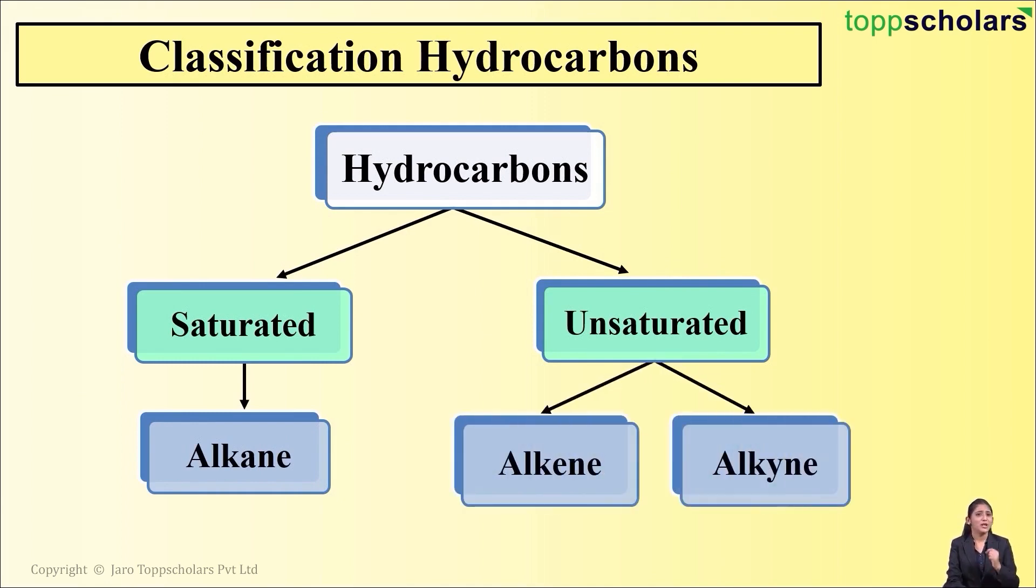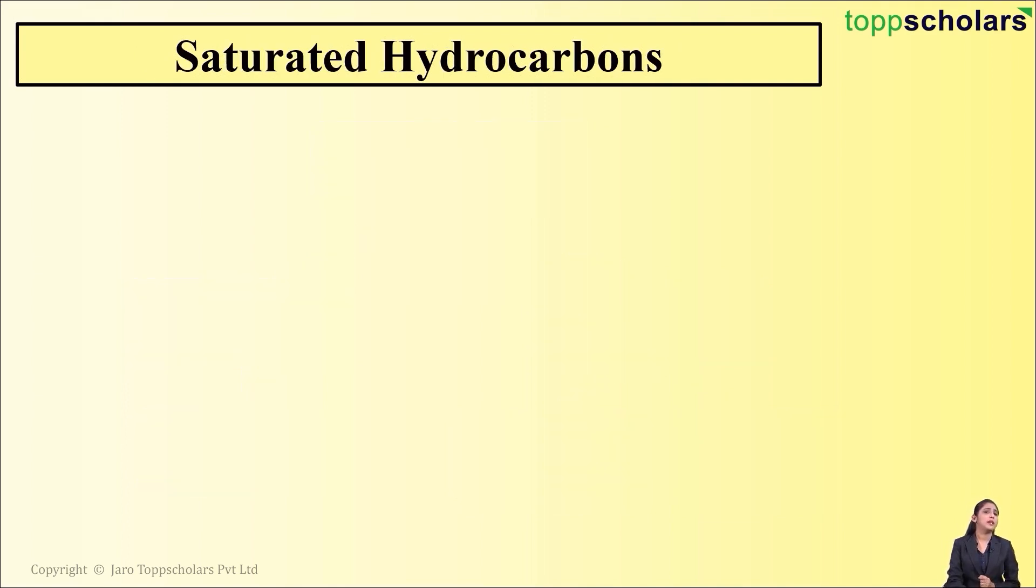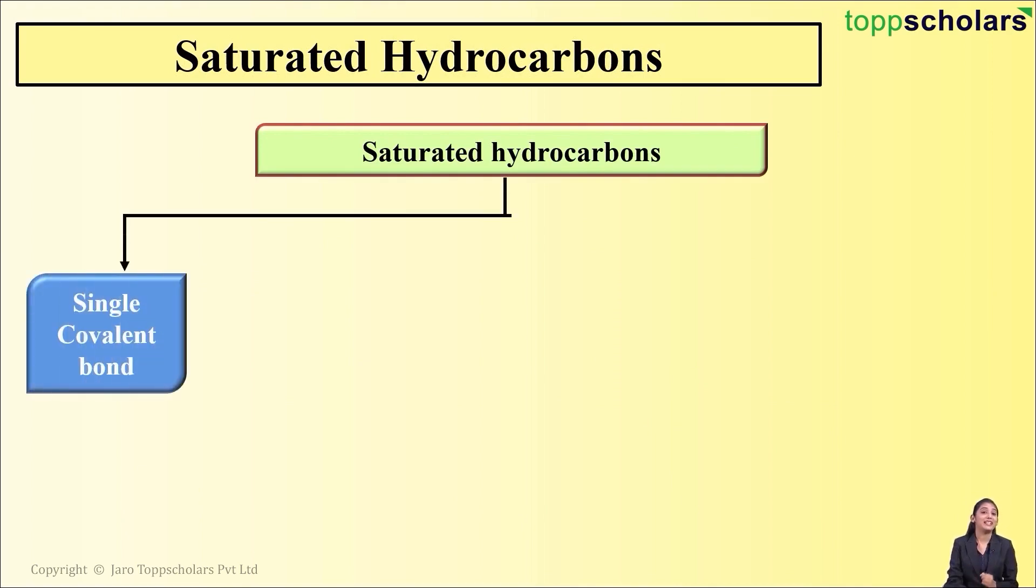Saturated hydrocarbons are hydrocarbons which contain carbon-carbon single bonds - that is, single covalent bonds. These saturated hydrocarbons are called alkanes. Alkanes are saturated hydrocarbons which contain carbon-carbon single bonds and are generally less reactive, remaining inert in the presence of many reagents.